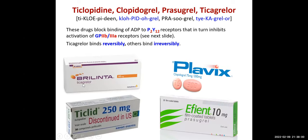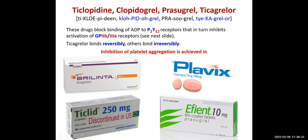We have ticagrelor (tablets taken orally), clopidogrel with brand name Plavix (tablets taken orally), prasugrel (tablets taken orally), and ticlopidine — which is discontinued because it causes severe side effects like bleeding. Inhibition of platelet aggregation is achieved in 1 to 3 hours with ticagrelor, 3 to 5 days with clopidogrel, and 2 to 4 hours with prasugrel.